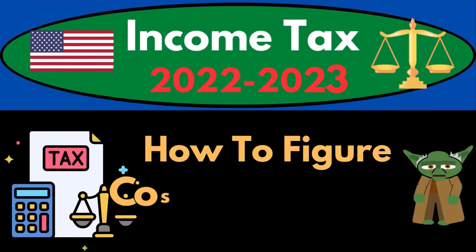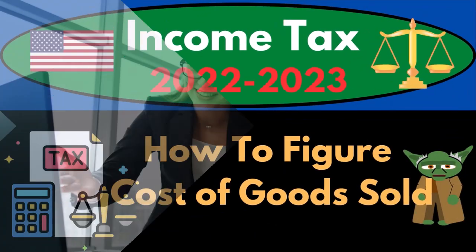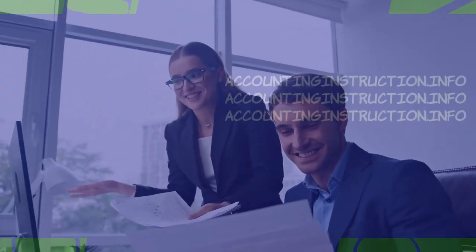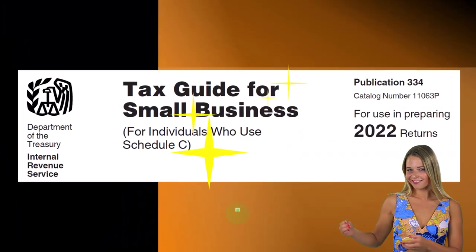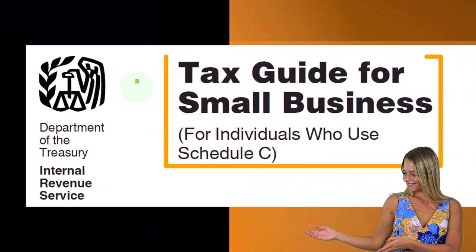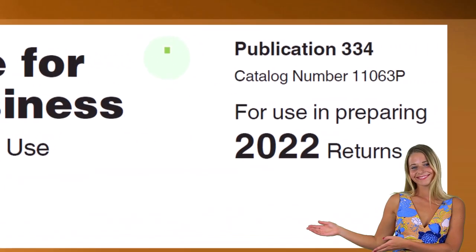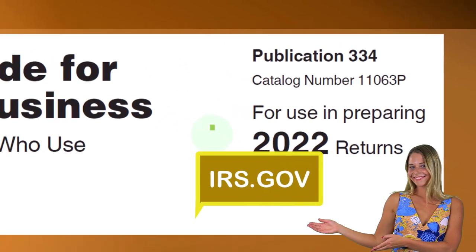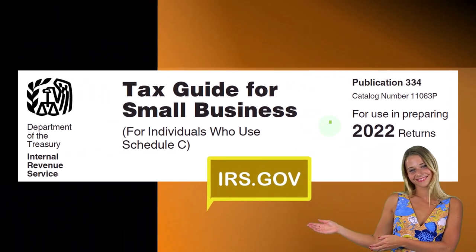Income Tax 2022-2023: how to figure cost of goods sold. Let's do some wealth preservation with some tax preparation. Most of this information can be found in the Tax Guide for Small Business for Individuals Who Use Schedule C, Publication 334, Tax Year 2022, available on the IRS website, irs.gov.